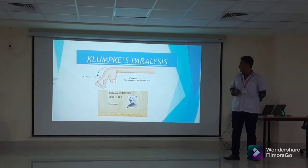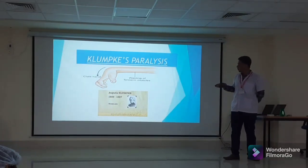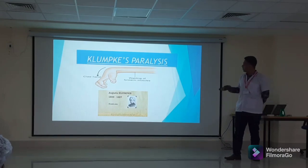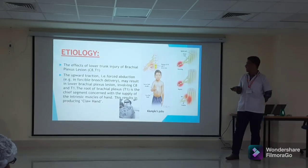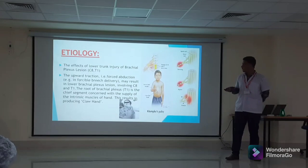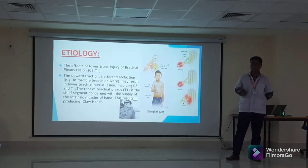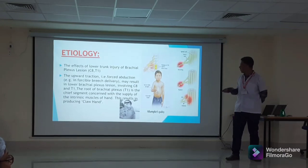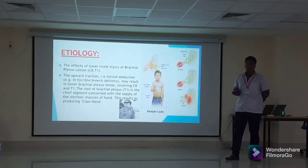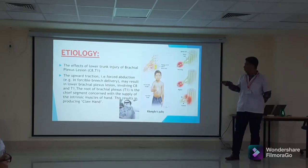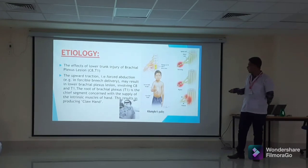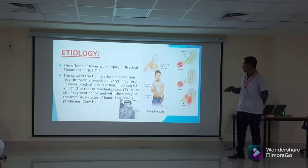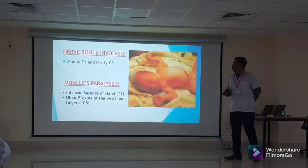Our next topic is Klumpke's paralysis, named after Augusta Klumpke in 1859-1927. It is the effect of lower trunk injury of the brachial plexus, involving C8 and T1. When there is upward traction — such as in forcible breech delivery — it may result in lower brachial plexus injury. The root T1, the first thoracic spinal segment, is the chief segment concerned with the supply of intrinsic muscles of the hand, so its paralysis produces claw hand. T1 is mainly affected and C8 is partly affected.